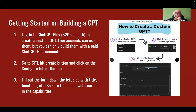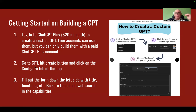Just go to GPT. There's a little button up in the upper right corner of your page — hit the create button and click on the configure tab at the top, the GPT store which is actually on the left side on the rail. And then fill out the form down the left-hand side. It asks for the title, the functions, all the things you want it to do, and be sure to turn on the web search capabilities.